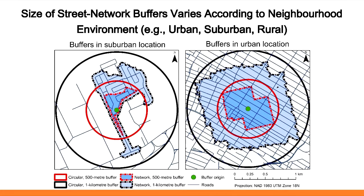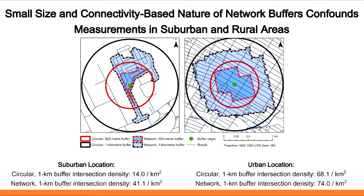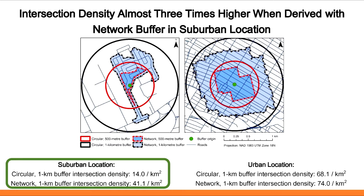Another artifact of circular versus network buffers: on the island of Montreal, the network buffer areas vary a lot according to the type of neighborhood environment. In a suburban location, the network buffer is much smaller than the circular buffer, while in an urban location it pretty much fills the circular buffer area. For our three-way intersection density measure, using the network buffer in a suburban location results in very different measures: the intersection density for the circular one-kilometer buffer is 14 intersections per square kilometer versus the network buffer, which is almost three times higher.